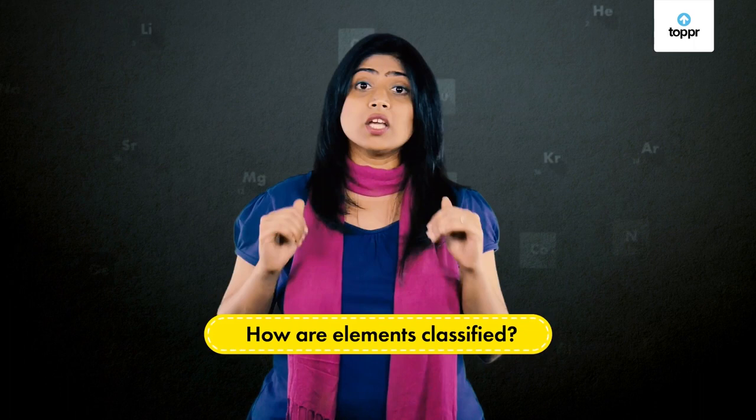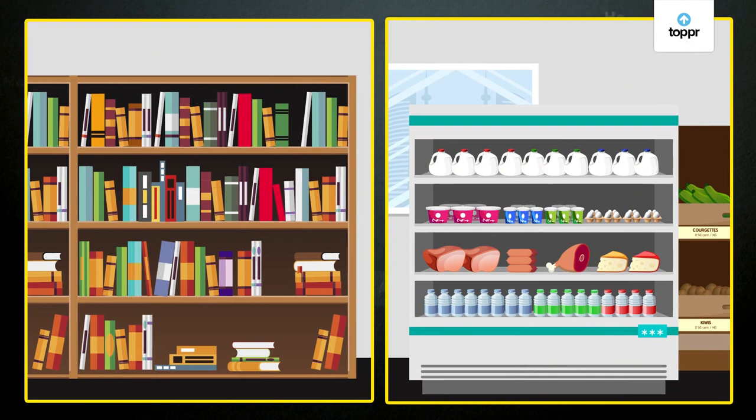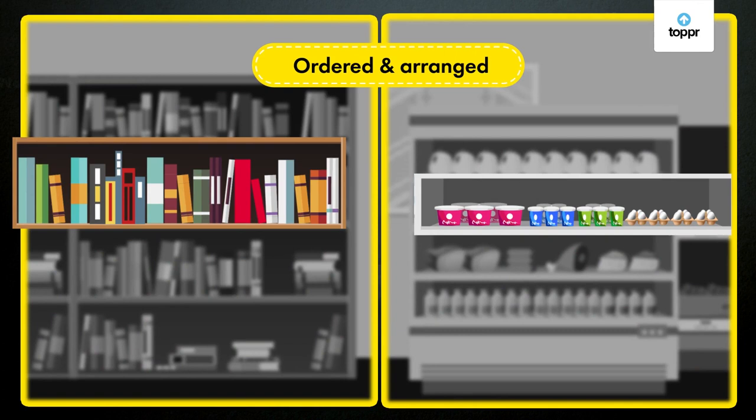Have you ever wondered how the elements around us are classified? You must have observed the arrangement of books in a library or the grocery section of a supermarket. Everything is properly ordered and arranged — we see order around us every day.